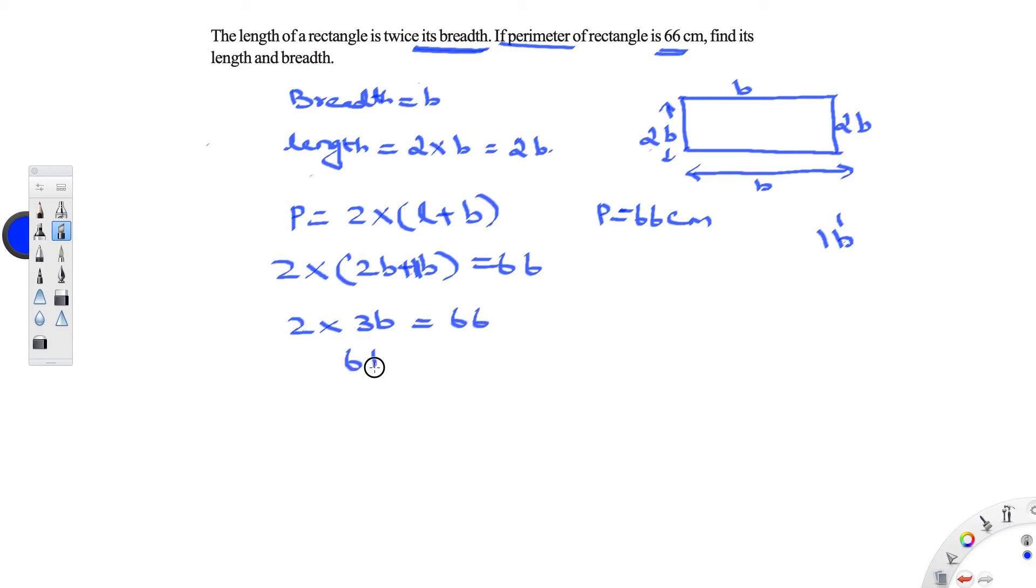2 times 3 is 6b is equal to 66. As here 6 is in multiplication, it will go as a division on the other side. So you get b as 11, breadth as 11.